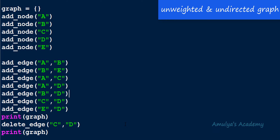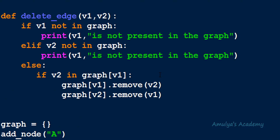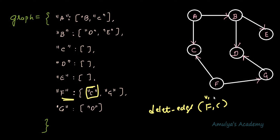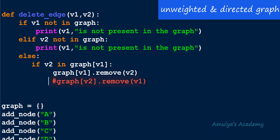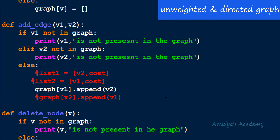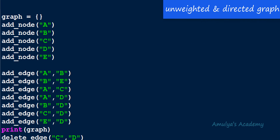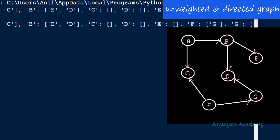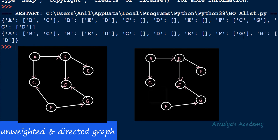Now let's change this for a directed graph. When deleting an edge — for example from F to C — we access the value of F and remove C from it. So V1 is F and V2 is C; we access graph[V1] and remove V2. No need for the second step because this is a directed graph. In add_edge, we also make it work for directed graphs by removing the reverse assignment. Executing with F and C: the edge is removed from F to C as expected.